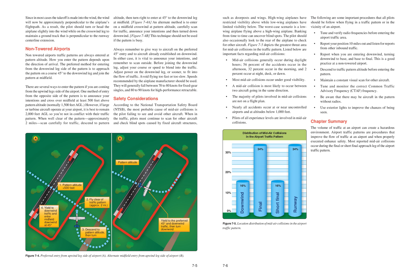When in the traffic pattern, pilots must continue to scan for other aircraft and check blind spots caused by fixed aircraft structures such as doorposts and wings. High-wing airplanes have restricted visibility above, while low-wing airplanes have limited visibility below. The worst-case scenario is a low-wing airplane flying above a high-wing airplane. Banking from time to time can uncover blind spots. Mid-air collisions generally occur during daylight hours: 56% of accidents occur in the afternoon, 32% in the morning, and 2% at night, dusk, or dawn.